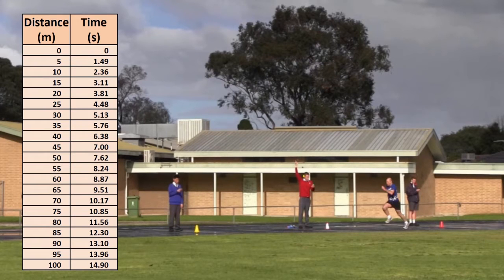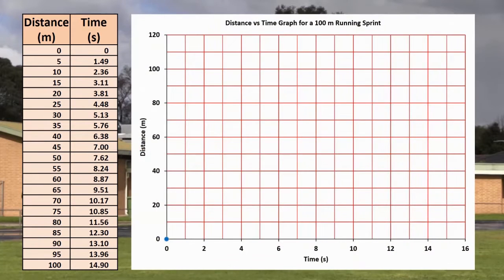When you look at a table like this one, the amount of information can be overwhelming. However, we can use a distance versus time graph to get a simple picture of what happened during the sprint.